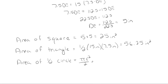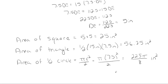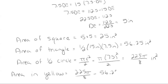This gives us pi times 7.5 inches squared over 2, which gives us 225 pi over 8 square inches. Our overall area in yellow is that semicircle minus the triangle plus the square: 225 pi over 8 minus 56.25 square inches plus 25 square inches, which gives us approximately 57.107 square inches.